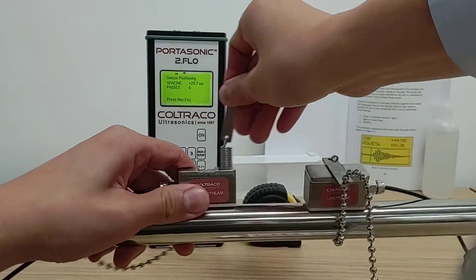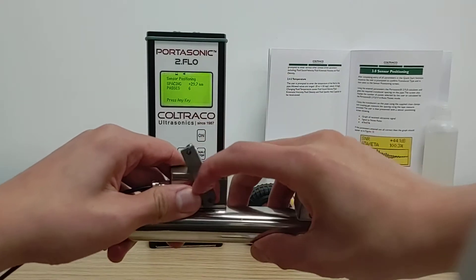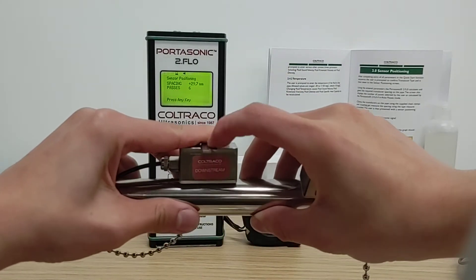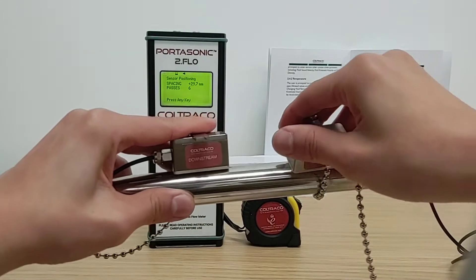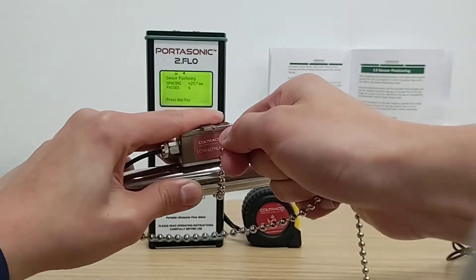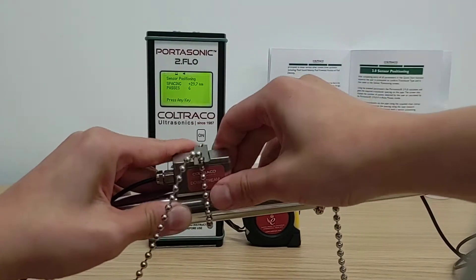Again, the process is similar. Place the rectangular bar and the groove over the sensor, pull the beaded chain around the pipe and pull as tightly as you can to ensure a firm contact.